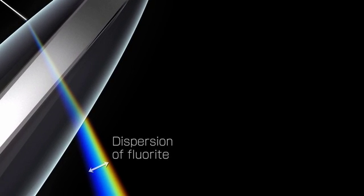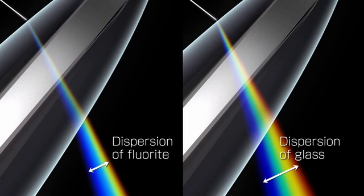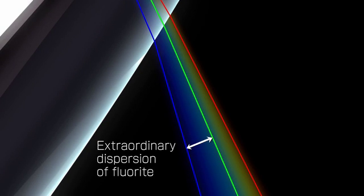Fluorite demonstrates lower dispersion than glass. Furthermore, the ratio of dispersion differs, with the range from green to blue being especially wide.